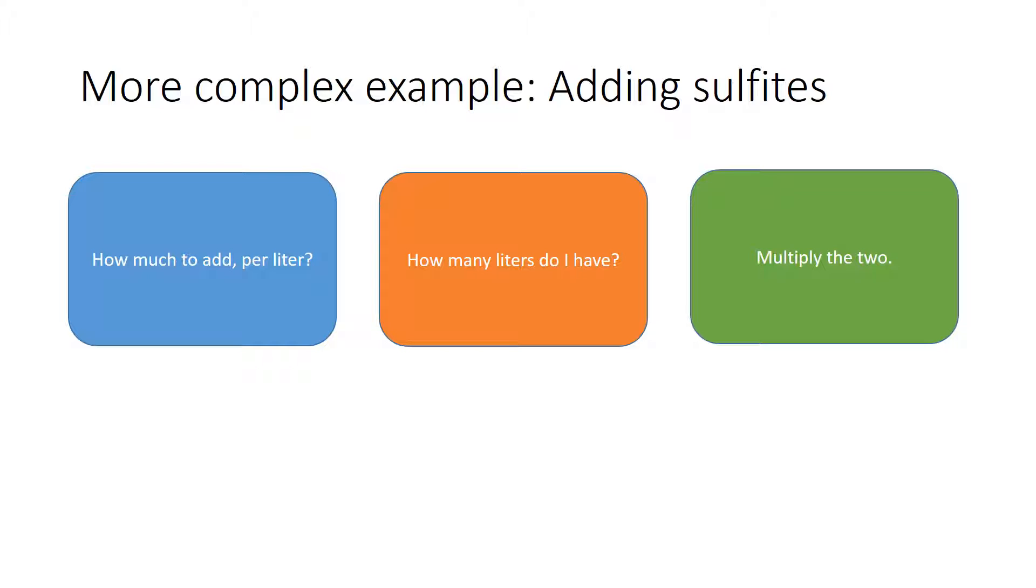So in the case of adding sulfites, I often know how many parts per million I want to add. The winemaker is going to figure out, or you're going to figure out how many parts per million of sulfites to add. And as we go forward in the class and talk more about what sulfites mean, you'll get a better intuitive feel for that. But let's just pick a number for now. Say we want 30 parts per million of sulfites in our wine.